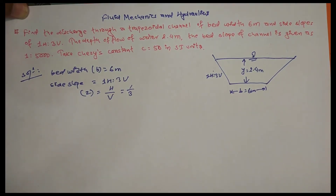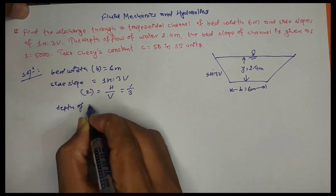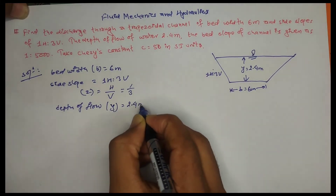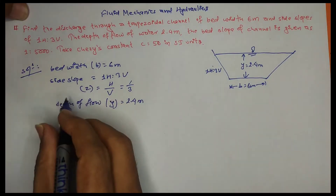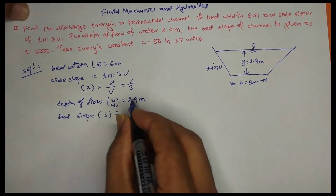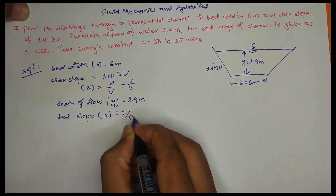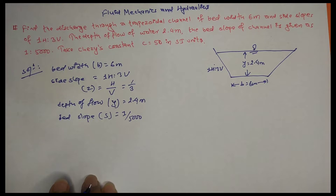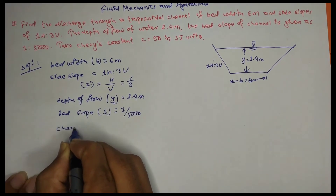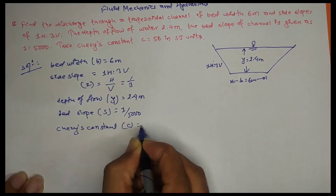Z value: the side slope ratio. Y value is 2.4 meters — depth of flow. Bed slope S value is 1 by 5,000. Chezy's constant C value is 50.